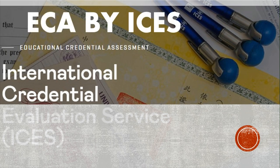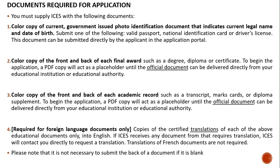Educational Credential Assessment by ISAS. There are three steps to completing your online ECA application. Step 1: Documents Required for Application. You must supply ISAS with the following documents.